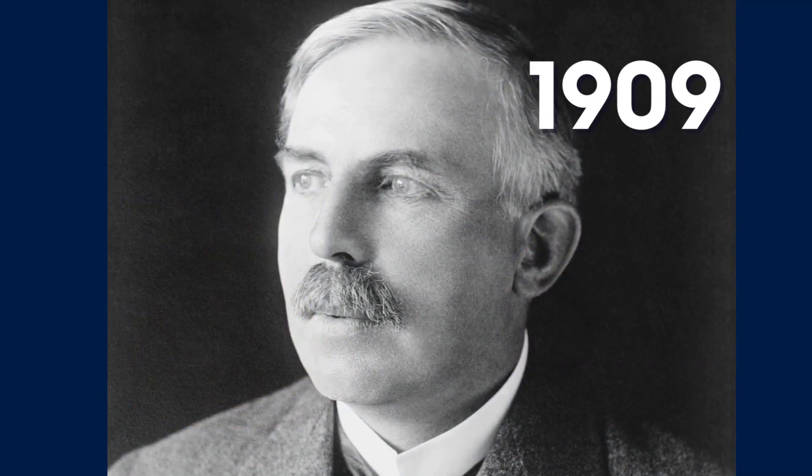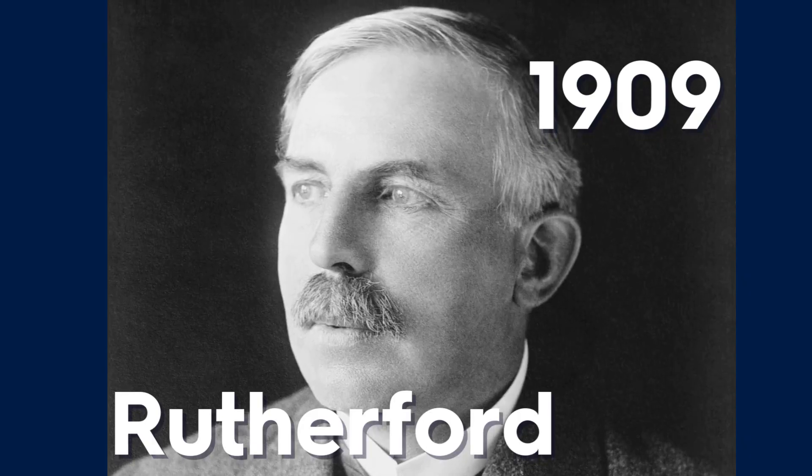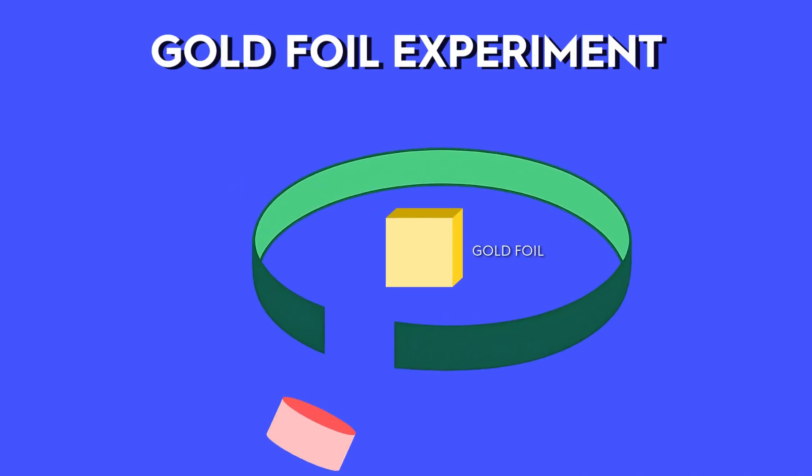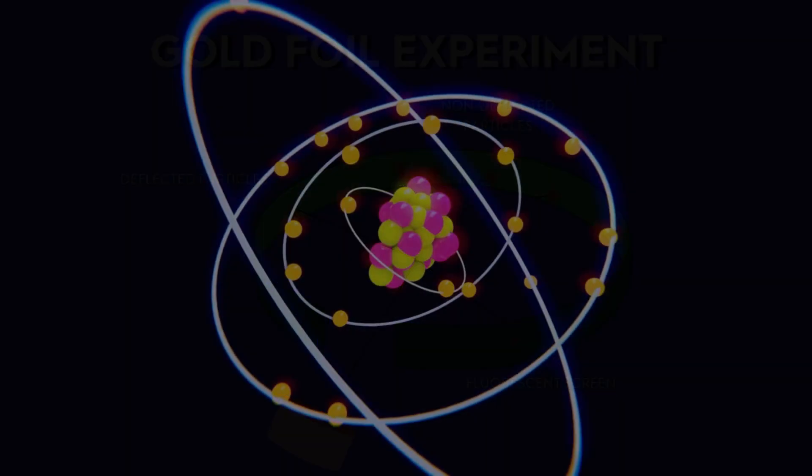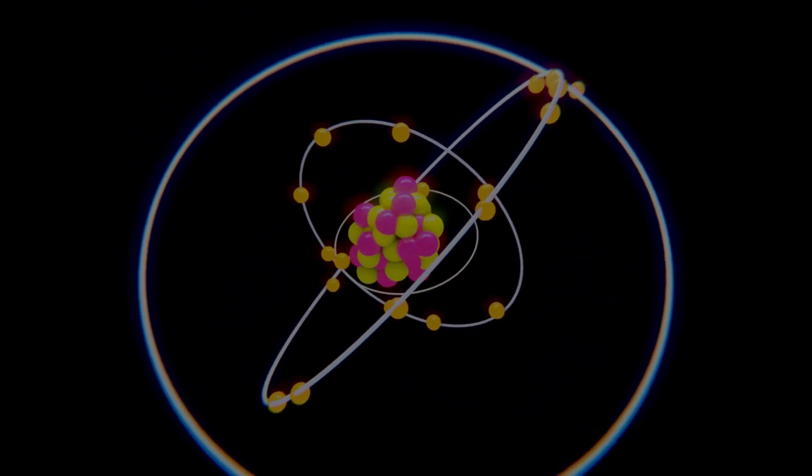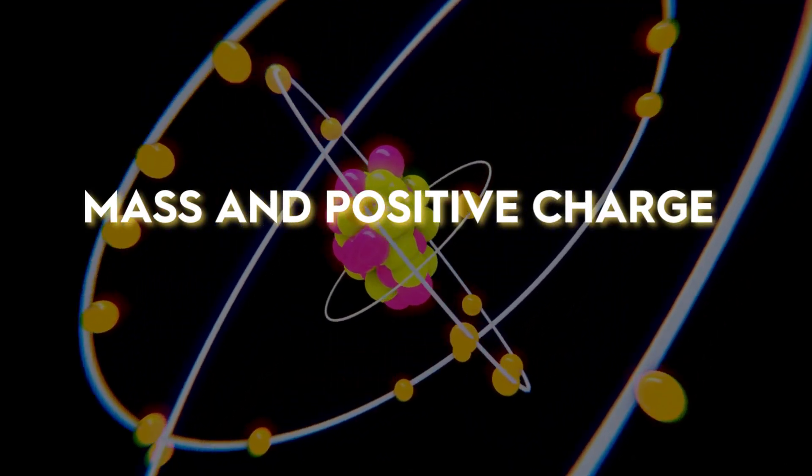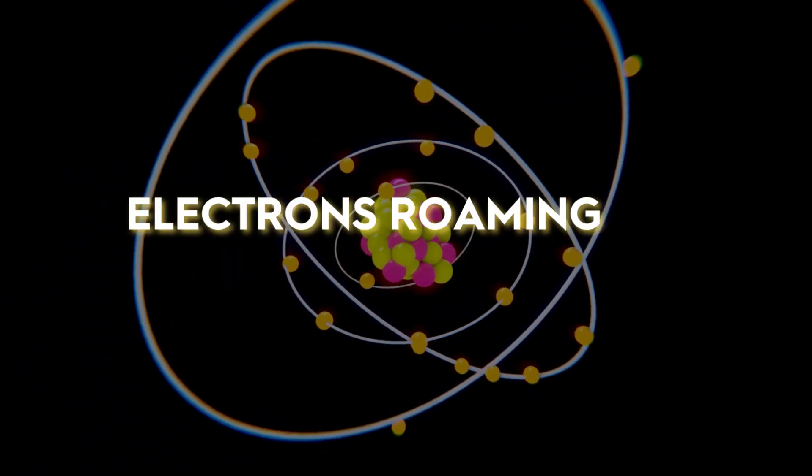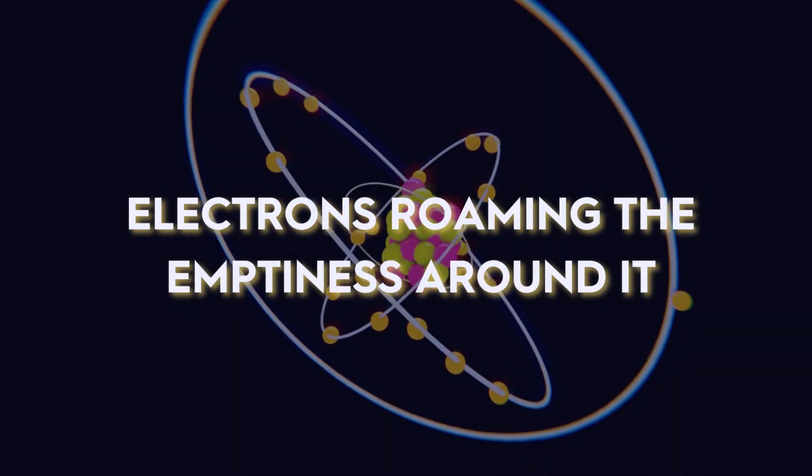Then, in 1909, Rutherford's team aimed alpha particles at a thin sheet of gold foil. Most passed straight through, but a few bounced back. It was an atomic shocker. Rutherford concludes that almost all mass and positive charge sit in a compact nucleus, with electrons roaming the emptiness around it.